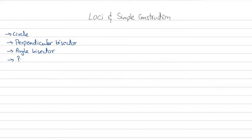Before we start, we're going to need construction tools for this topic — a geometry box — namely a compass, pencil, scale, protractor, eraser, and sharpener.